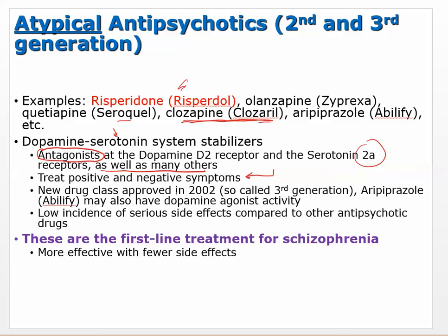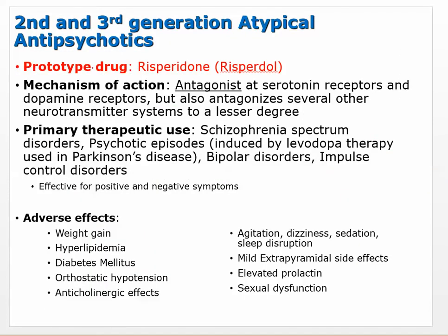A newer drug class approved in 2002, sometimes called third generation — where aripiprazole comes in — may have dopamine agonist activity as well, and has a lower incidence of serious side effects compared to other antipsychotics. Atypicals are the first line of treatment for schizophrenia; a newly diagnosed patient will probably receive an atypical antipsychotic because they are more effective with fewer side effects.